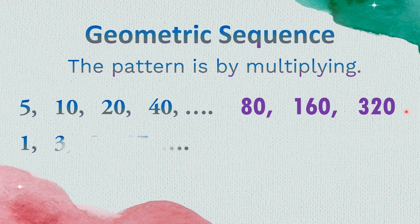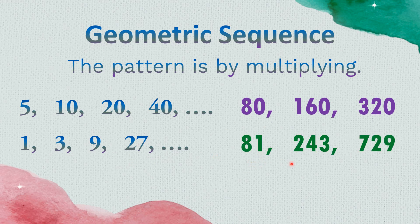Next example of geometric sequence: 1, 3, 9, and 27. The number to be multiplied is 3. So: 1 times 3 is 3, 3 times 3 is 9, 9 times 3 is 27. The next three terms after 27 are: 27 times 3 is 81, times 3 is 243, times 3 is 729.